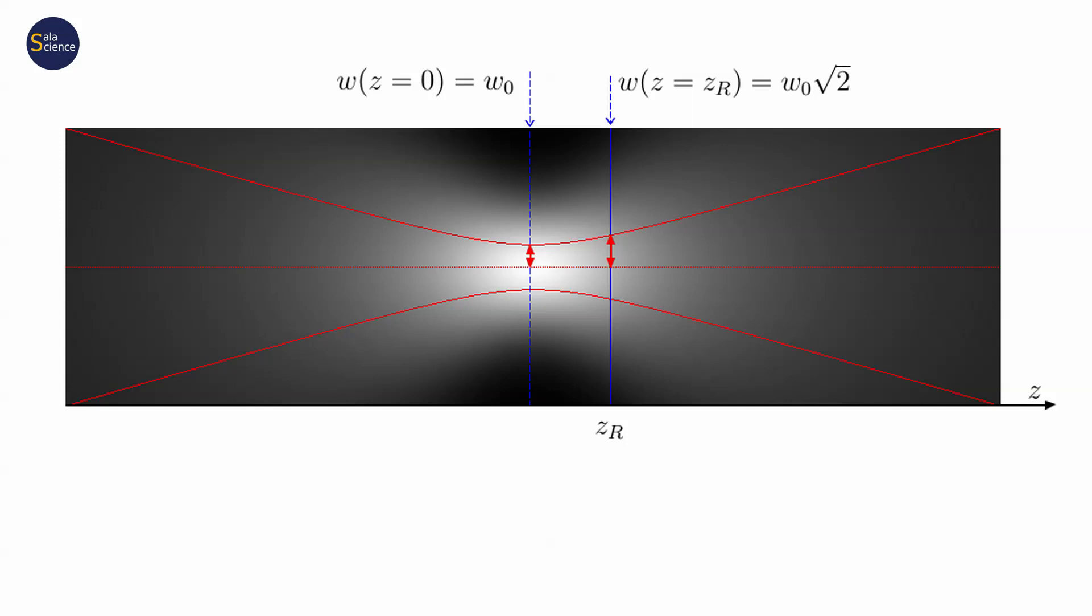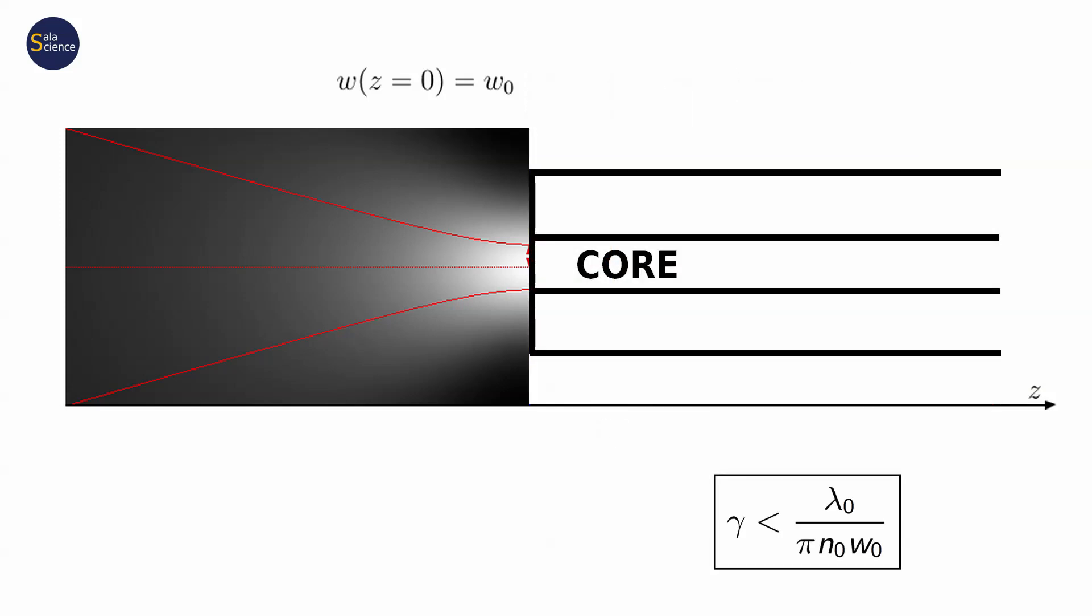In the same way, a beam which exits the fiber diffracts. On the other hand, launching light into a fiber is an opposite process to diffraction. So we can assume that the beam at waist W0 is the width of a mode that is propagated in a fiber. In such case, angle gamma has to fulfill a slightly different condition.